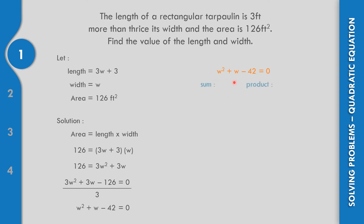Think of a factor where the sum equals 1 — that is the value of B — and the product equals A times C. So 1 times negative 42 is negative 42. Think of a factor where the sum is 1 and the product is negative 42. The factor of W squared gives us W and W.